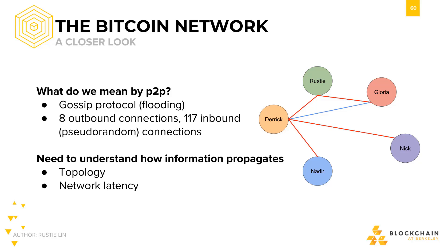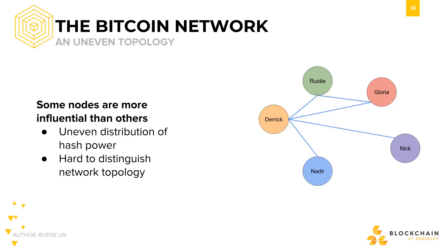Network topology means how the Bitcoin network would look if you were to graph it out, like we've been doing with circles for individual nodes and lines for connections between nodes. In Bitcoin, we want an even topology. We want each node to have roughly the same weight — mining power in our case — have random connections, and look fairly uniform.